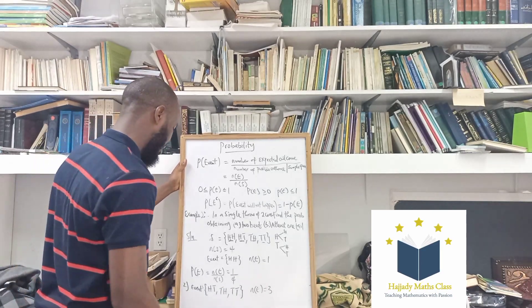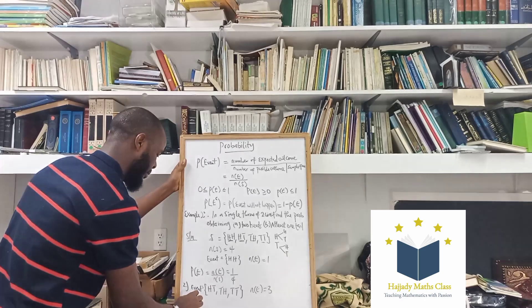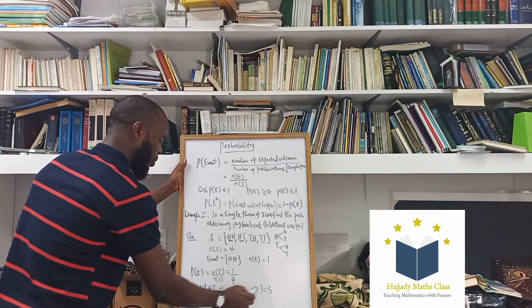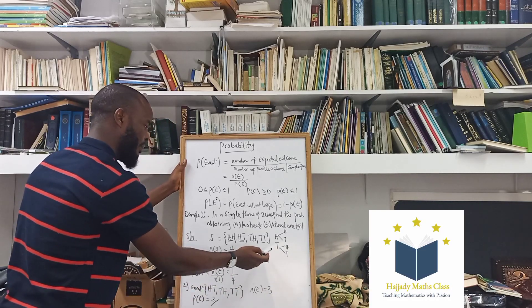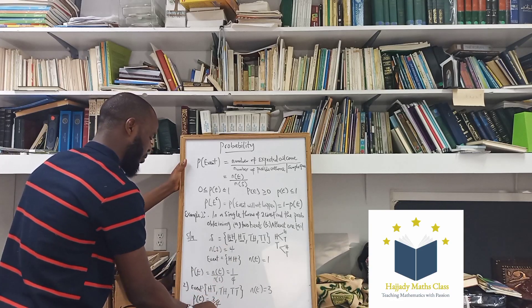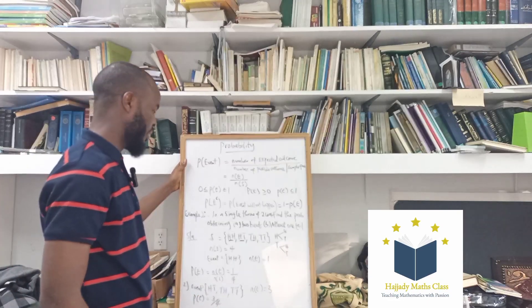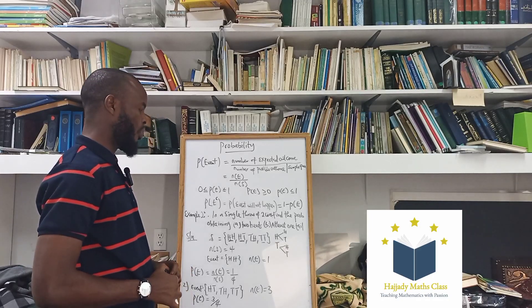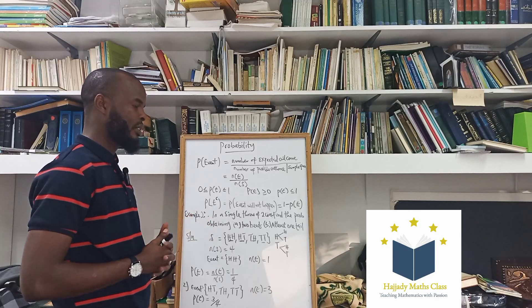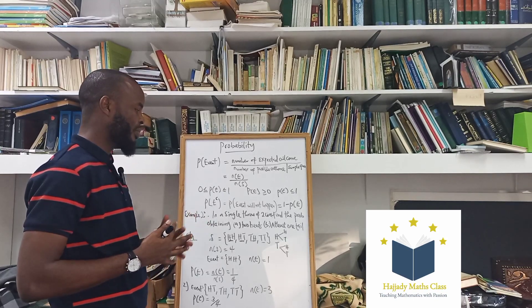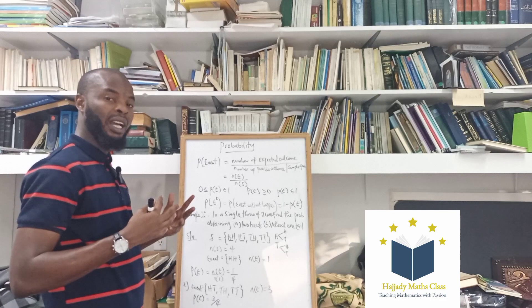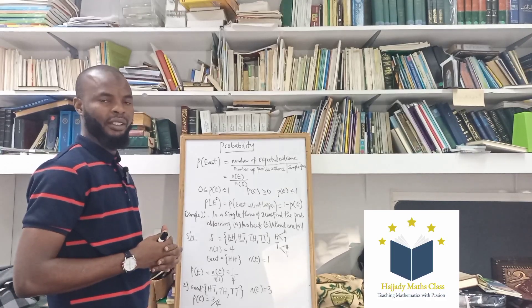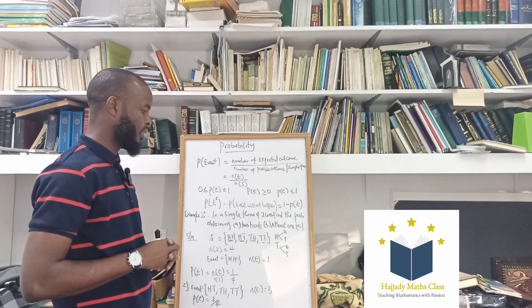So with this, the probability is: number of expected outcomes, which is three, over number of sample space, which is four — giving us three over four. In my subsequent episode I'm going to explain more on coins with three coins, how to determine your sample space, and also the situation with a die, then we move to mutually exclusive and mutually exhaustive events. Thank you very much for watching. See you next time. Bye.